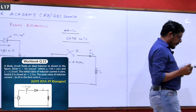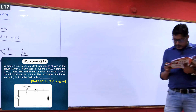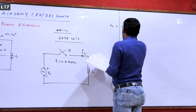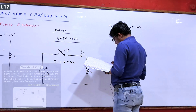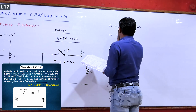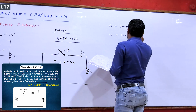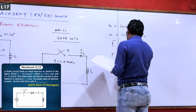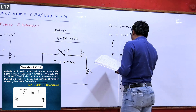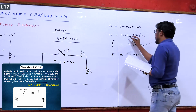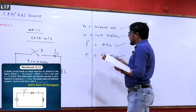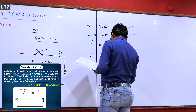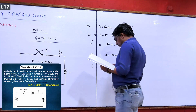A diode circuit feeds an ideal inductor as shown in the figure. Vs equals 100 sin(omega t) volts, where omega equals 100π radians per second — which means the frequency is 50 Hz, the time period is 1 upon 50 equals 20 milliseconds, and 100π means 314 radians per second. The inductance value L given is 31.83 millihenry.